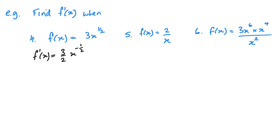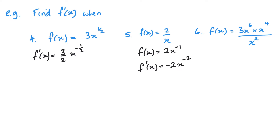Number 5: with this one, the first thing I need to do is take the x to the top. To do that, it's going to become x to the power of negative 1. Then I can go ahead and differentiate — multiply by negative 1 and take one away from the power. In this case, I like to put it back in the same form it was in the question, but leaving it in index form is perfectly acceptable.